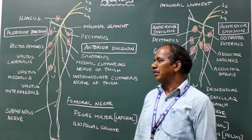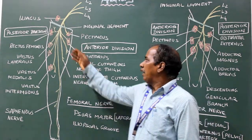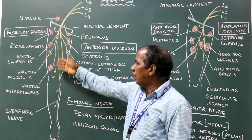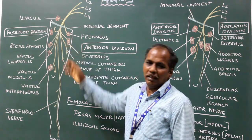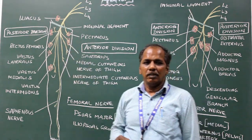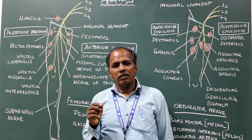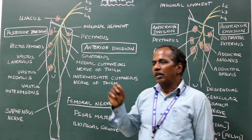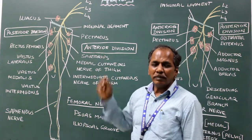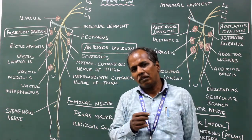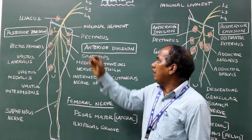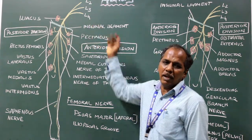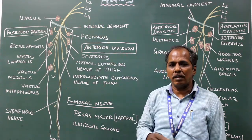The femoral nerve is the chief nerve of the anterior compartment of the thigh. Its root value is formed by the dorsal division of the anterior primary rami of L2, L3, and L4 spinal nerves.